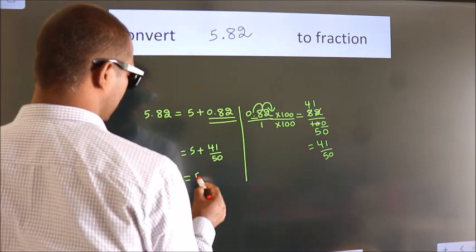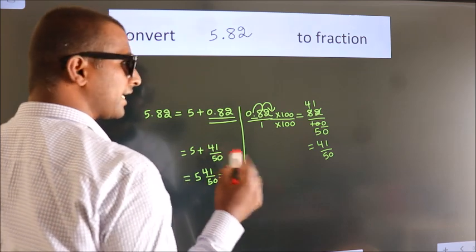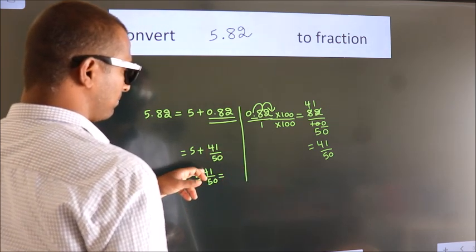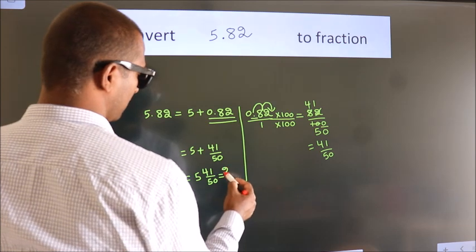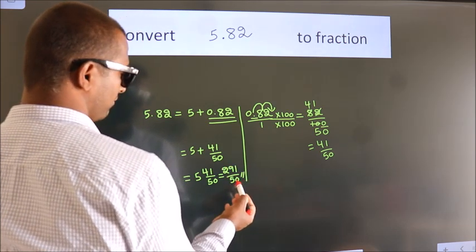In mixed fraction it is 5 into 50, 250 plus 41. 291 by 50 is our fraction.